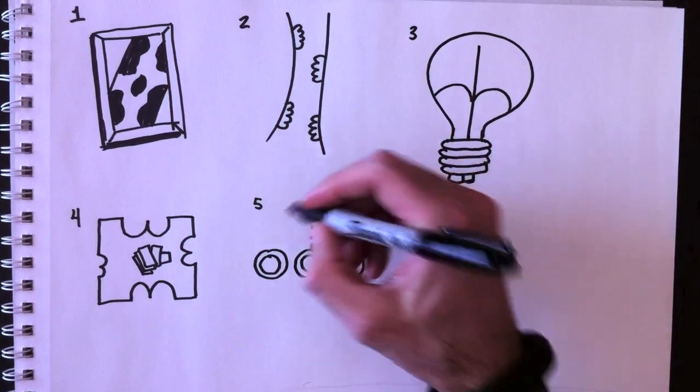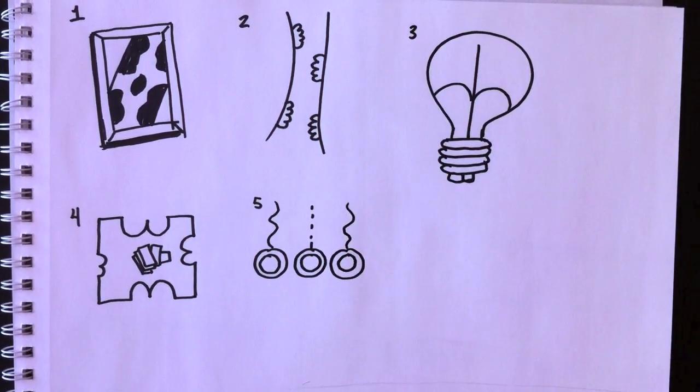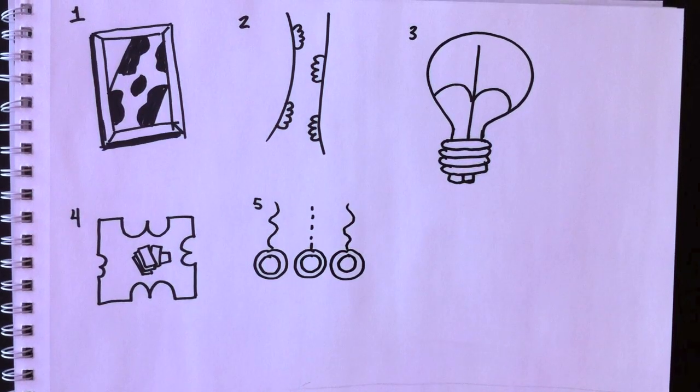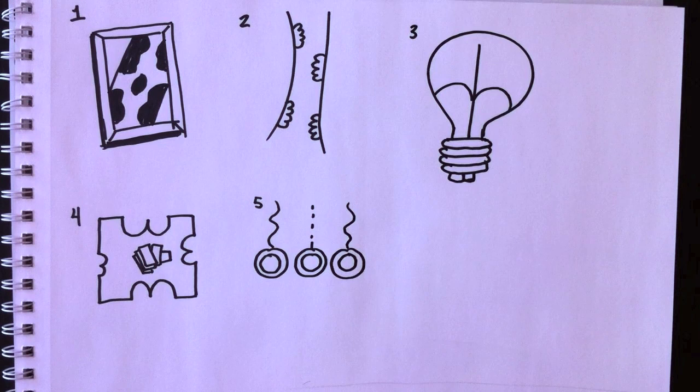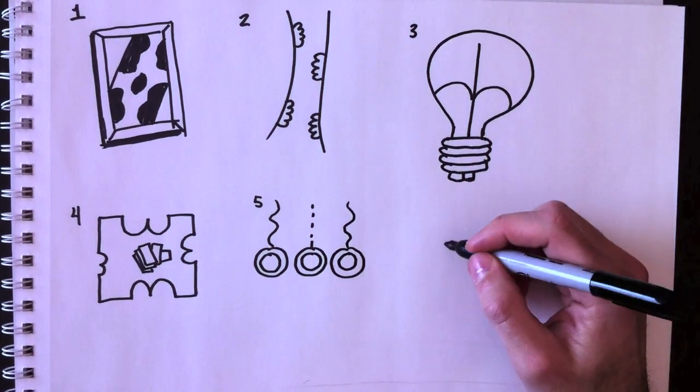Alors c'est trois cabaleros allant à la toilette. Et celui du milieu compte une blague. Les deux autres en rient. So this one is three cabaleros going to the bathroom. The one in the middle is telling the joke. And the two other ones are laughing about it.